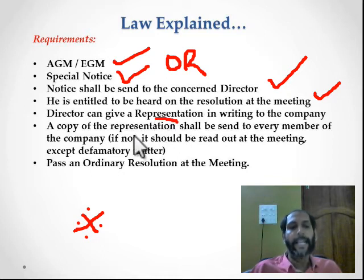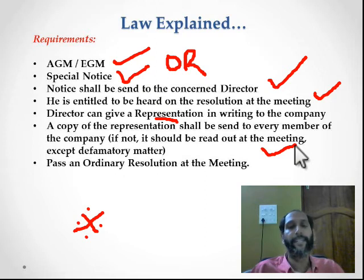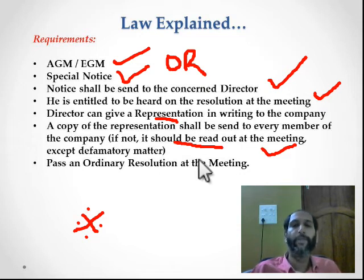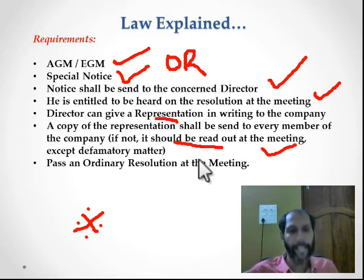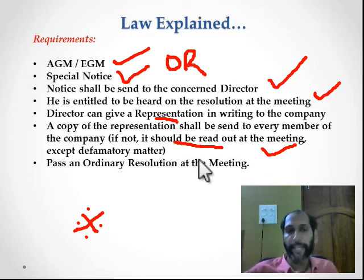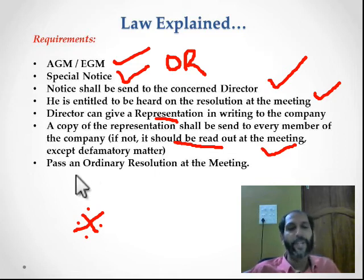The director can give a representation in writing. A copy of that representation shall be sent to every member before the meeting. If that is not practicable, the representation should be read out at the meeting. So there are two options: either send the representation in advance to all shareholders before the meeting, or if that is impracticable, read the representation out at the meeting.